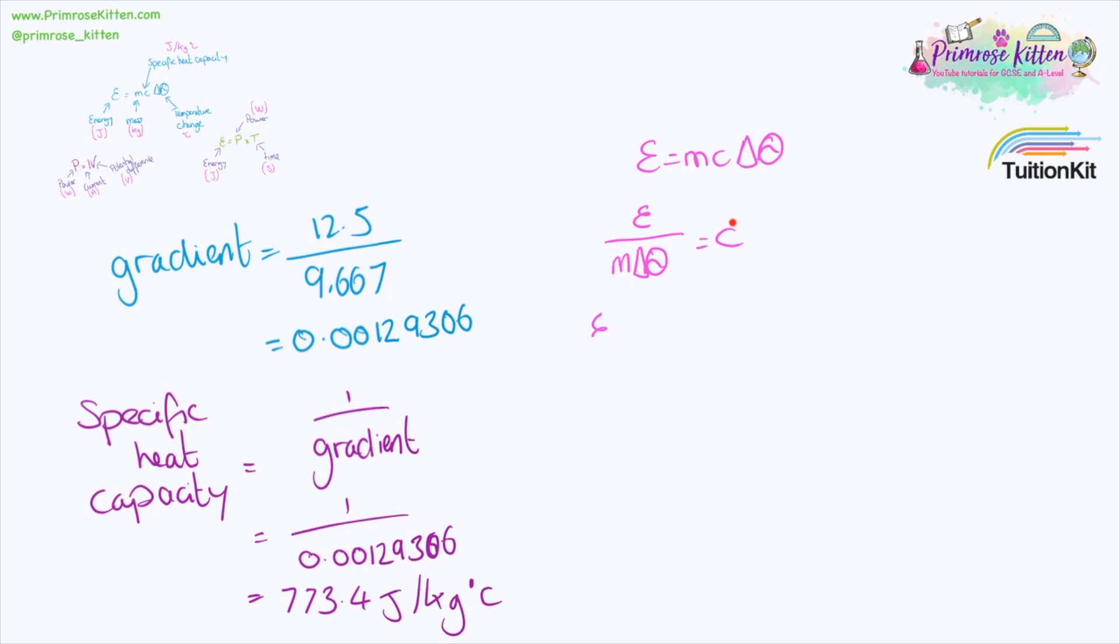Rearrange the equation to find specific heat capacity. And then I just like to write all the values down so I know what we are looking for. Mass is one because it's a one kilogram block. Energy, that is the total energy at 10 minutes. And then the temperature change at 10 minutes.